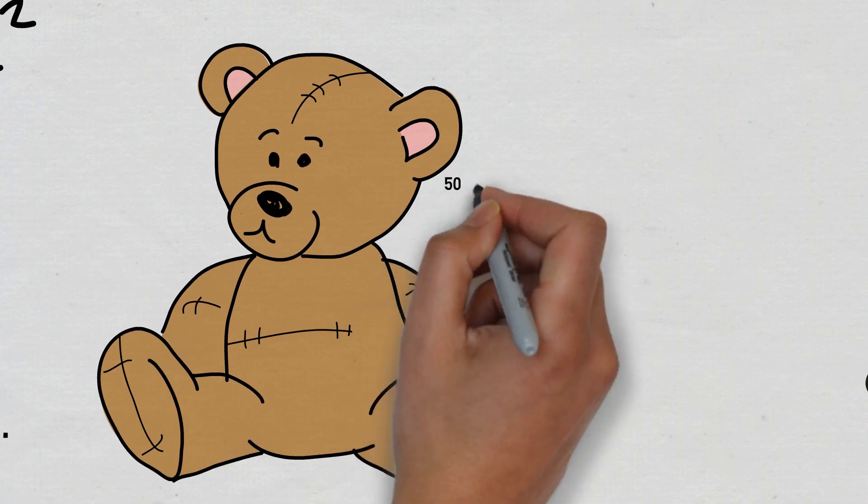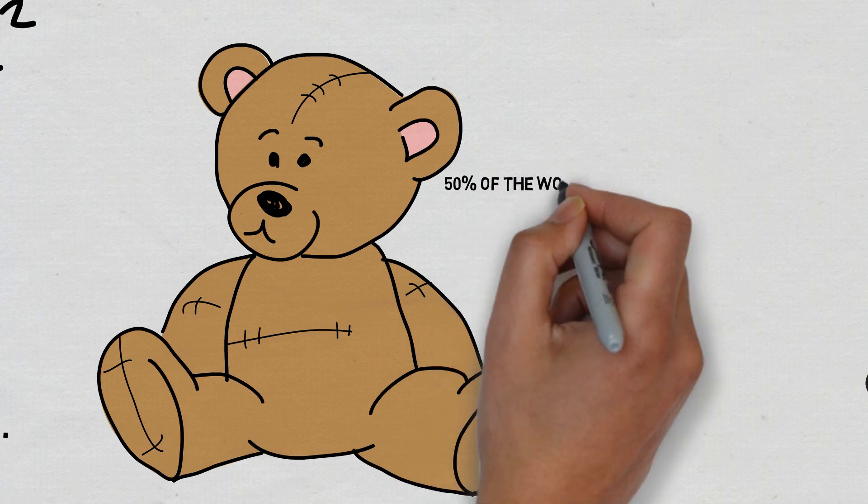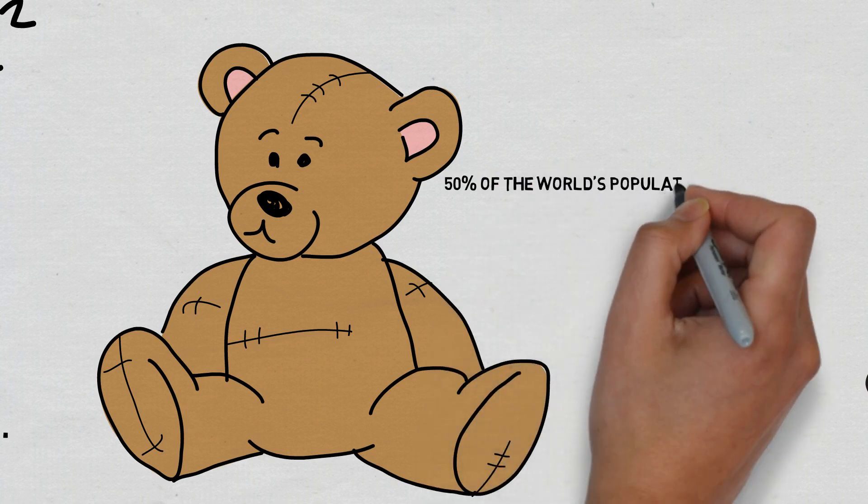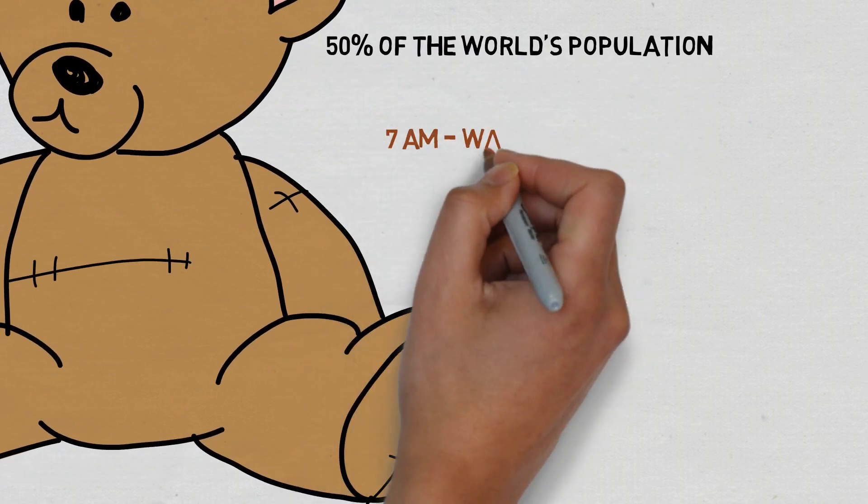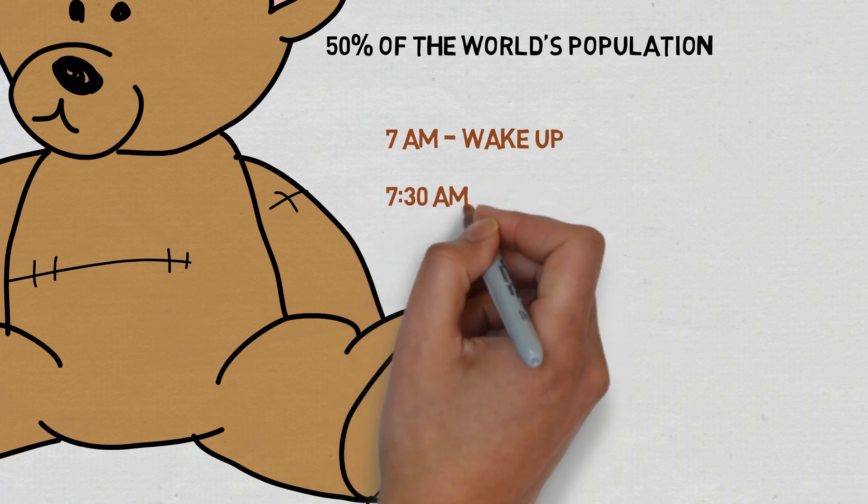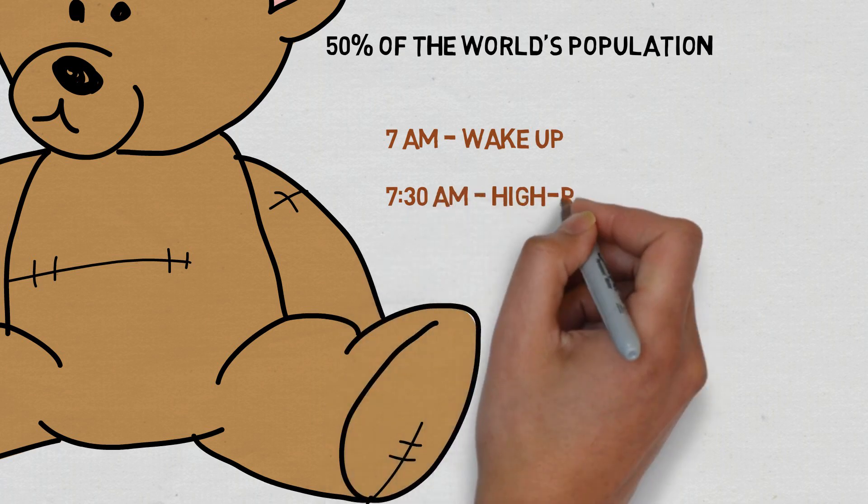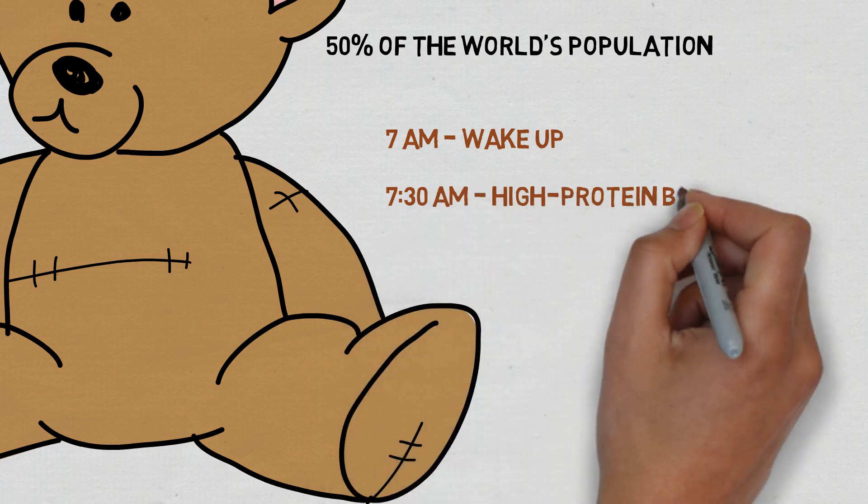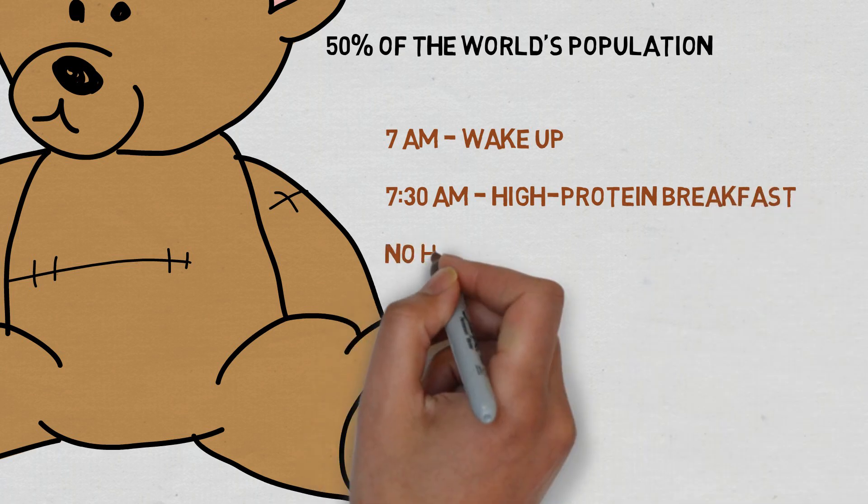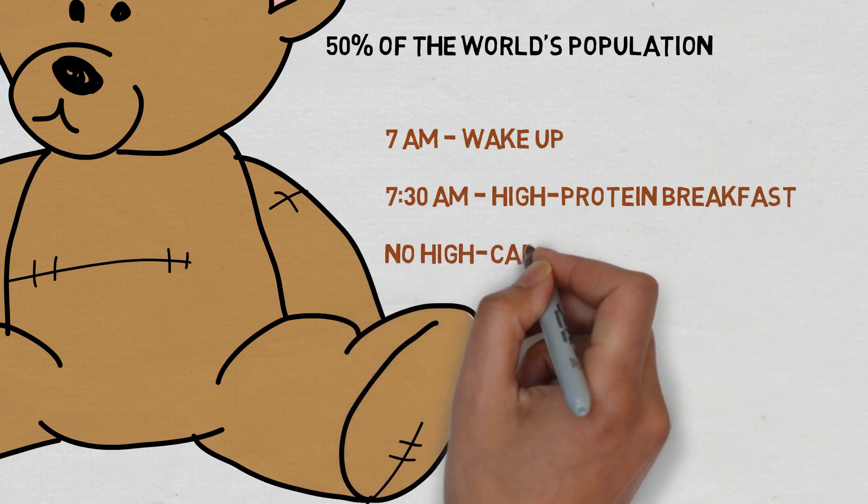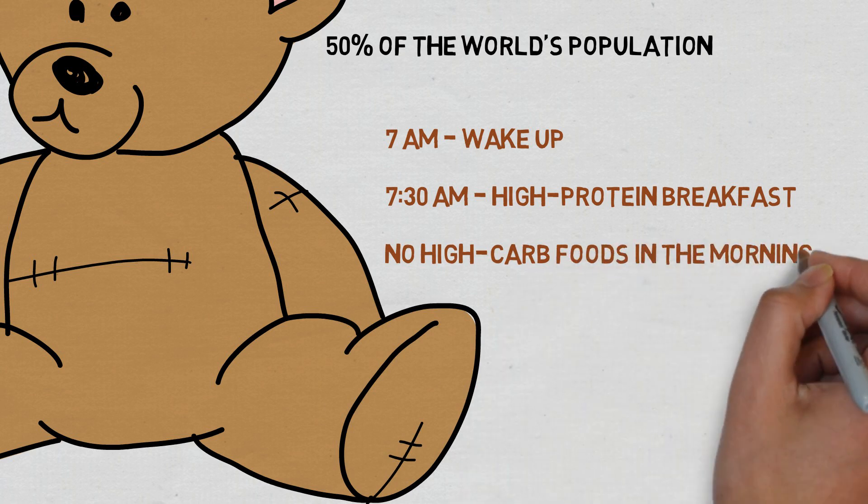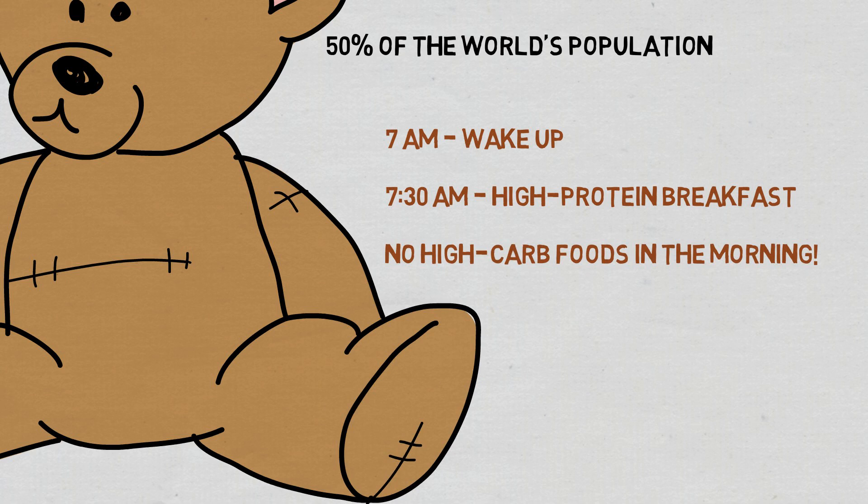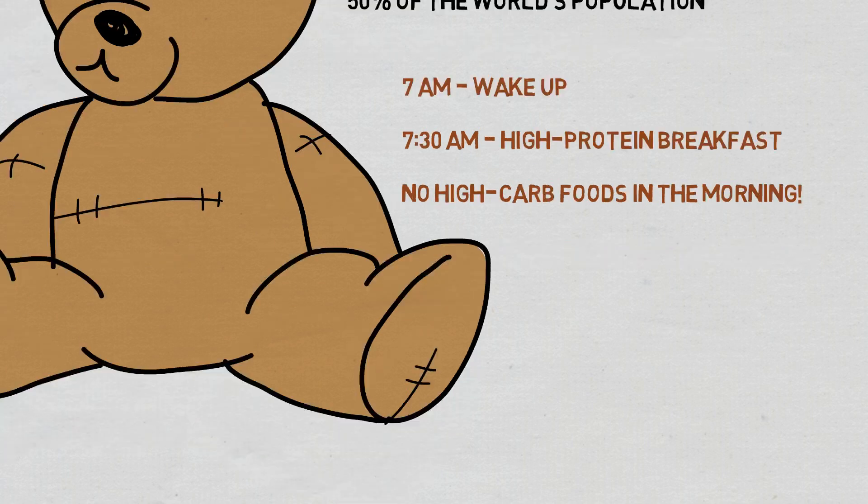So now that you know your chronotype, we'll look at bears first since they consist of roughly half of the world's population. The ideal wake-up time for a bear is 7am, so you should consider adapting an early routine if you're a bear. Bears should eat a high-protein breakfast as soon as they wake up, so say around 7:30am. However, bears may feel tempted to try high-carb foods in the morning. The only downside with this is that it can actually lower your cholesterol levels, and these are important if you want to remain active in the day.